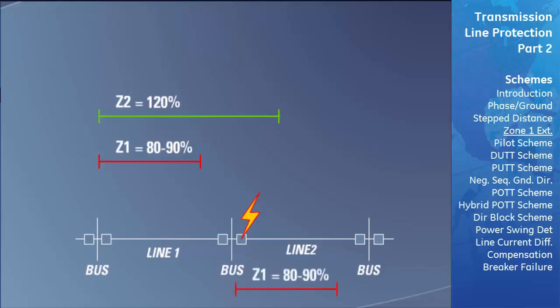The disadvantage of the Zone 1 Extension Scheme is that external faults within the extended Zone 1 reach will trip the breaker instantaneously, even if that breaker did not need to be tripped. This needless tripping increases the amount of breaker maintenance needed and causes a needless loss of power supply to some customers.